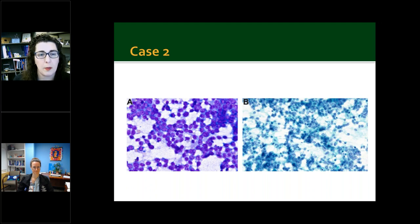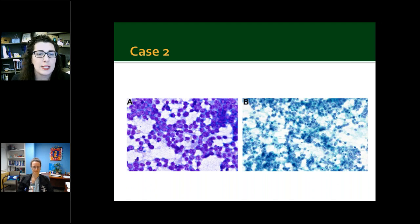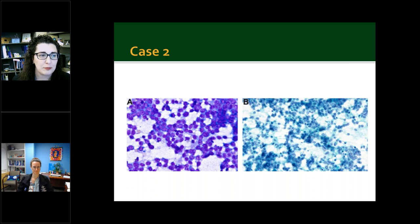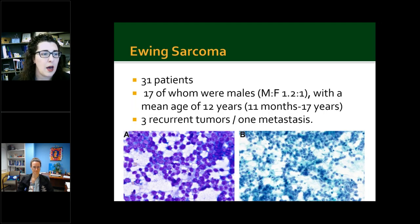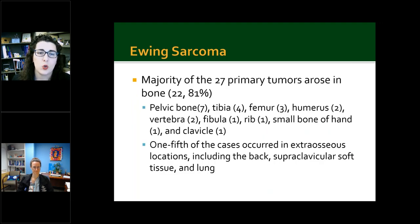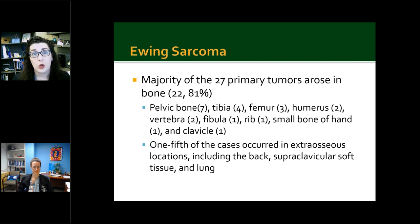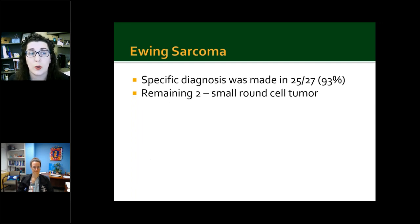Case two shows cellular smears composed of round to oval cells with minimal cytoplasm, indistinct cell borders, and some cytoplasmic extensions into surrounding cells. You can see mitotic figures, and the chromatin is granular and evenly dispersed with conspicuous single or multiple nucleoli. In the background, scattered apoptotic bodies are present. This is a great representation of Ewing sarcoma. A majority of the 27 primary tumors arose in bones — more frequently in the pelvis, tibia, and femur, with a few in other bones. One-fifth of cases occurred in extra-osseous locations including back, supraclavicular soft tissue, and lung. A specific diagnosis was made in 25 of the 27 cases; the remaining two were classified as small round cell tumor.